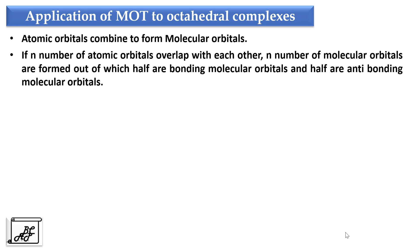For example, if two atomic orbitals overlap with each other, two molecular orbitals will be formed, out of which one will be bonding and the other will be anti-bonding. If three atomic orbitals overlap, three molecular orbitals will be formed: one bonding, one anti-bonding, and the remaining one will be non-bonding. If four atomic orbitals overlap, four molecular orbitals will be formed, out of which two will be bonding and two will be anti-bonding.